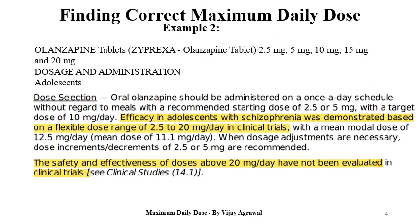Then example 2. I have taken the example of olanzapine tablets. The brand name is Zyprexa olanzapine tablets. The tablets are available in 4 strengths: 2.5 mg, 5 mg, 10 mg, and 15 mg. Then 20 mg is also one of the highest strengths. In the doses and administration section for adolescents, it is highlighted that efficacy in adolescents with schizophrenia was demonstrated based on a flexible dose range of 2.5 mg to 20 mg per day in clinical trials. That means 20 mg per day was tried in clinical trials, and the highest strength is also 20 mg. So here 20 mg is the maximum daily dose.